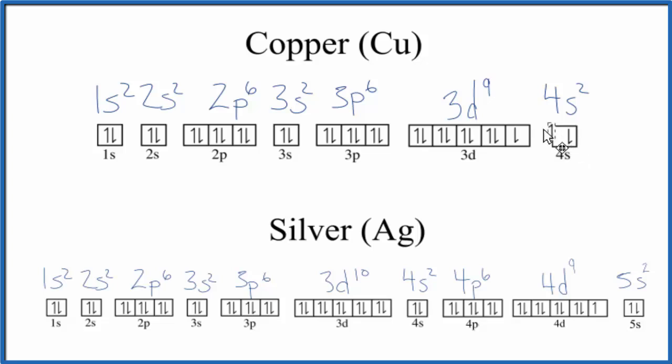So again that'll change these numbers here. Let's do that. We've moved one here, so instead of 3d9 we have 3d10. This will be 4s1. And then here we'll have 4d10 and 5s1.